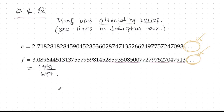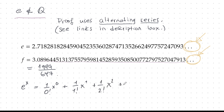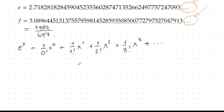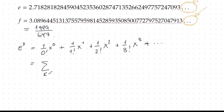We need a mathematical definition for e, and we can get that from the power series of the exponential function. So e to the x is 1 over 0 factorial plus 1 over 1 factorial times x, plus 1 over 2 factorial times x squared, plus 1 over 3 factorial times x cubed, and so on. Written in summation form, that's the sum from k equals 0 to infinity of x to the k over k factorial.